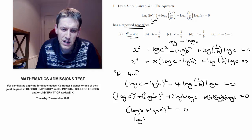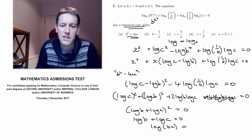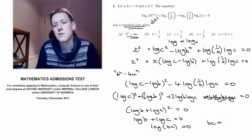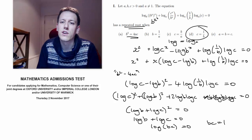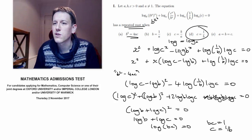So for that to happen, we'll have to have log b plus log c equals 0. So that's log of b times c equals 0, which means that b times c equals 1. And we've got an answer here, c equals 1 over b. And so that's that.